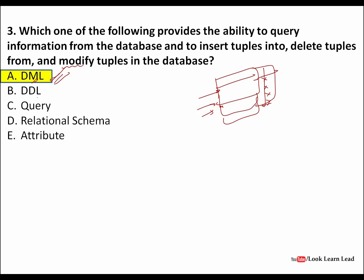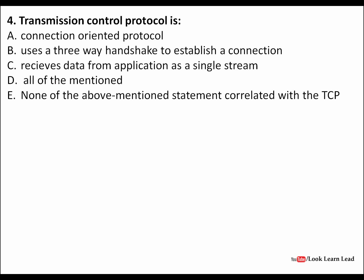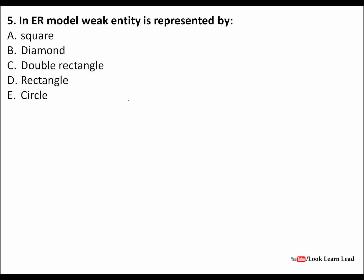The Transmission Control Protocol — we all know it is connection-oriented. UDP is connectionless whereas TCP is connection-oriented and uses a three-way handshake to establish a connection. It also receives data from the application as a single stream. So the three properties are: connection-oriented, three-way handshaking, and single stream — all of the above is the answer.